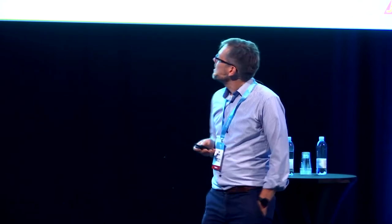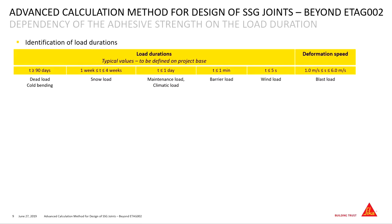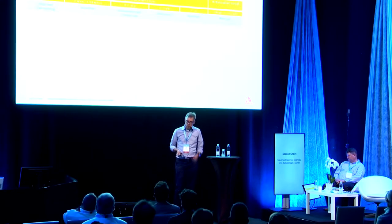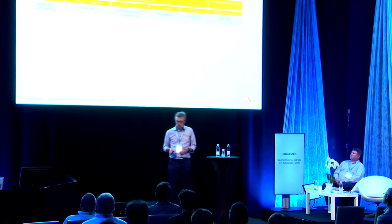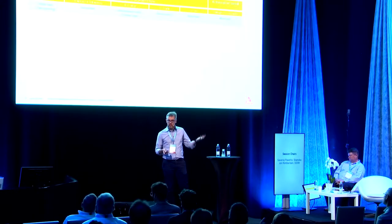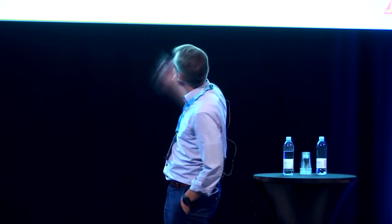And how to define the structural glazing joint dimensions simultaneously, considering different load durations? Coming now to a picture showing how reality looks: we have wind load — wind gusts acting several seconds onto the glass and then on the adhesive as well. You have barrier loads, maintenance and climatic loads which could act for days. Then you have snow loads — here we are talking about weeks in most regions of the world. And dead load or cold bending, maybe permanently. On the other extreme, we have blast loads — unique events where we are talking milliseconds acting on the joint.